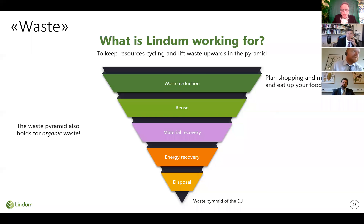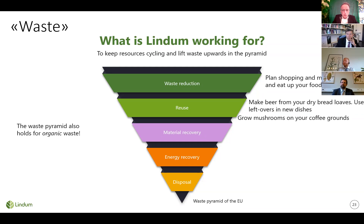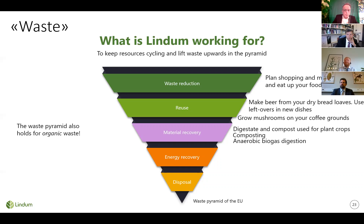For example, waste reduction means planning shopping and meals well and eating up your food. Reuse can be making beer from dry bread loaves or using leftovers in new dishes. You can grow mushrooms on your coffee grounds — that's midway between material recovery and reuse. You can use digestate from biogas plants and compost for plant crops — that's material recovery. Anaerobic biogas digestion is both material recovery and energy recovery. Incineration is the least wanted solution for organic waste; landfilling is not even allowed in the EU.